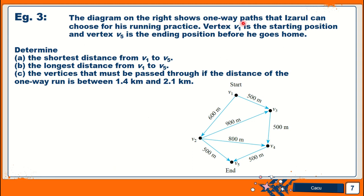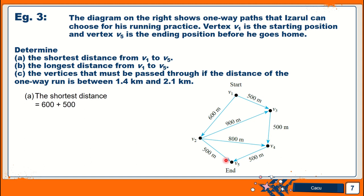This is a one-way path that Izzaru can choose for his running practice. Vertex V1 is the starting position and vertex V5 is the ending position before he goes home. Determine the shortest distance from V1 to V5. Looking at the routes: the first route gives 600 plus 500 = 1,100 meters. The second route gives 500 plus 500 plus 500 = 1,500 meters. So we are going to take V1 to V2 to V5 as the shortest distance: 1,100 meters.